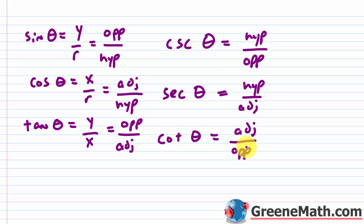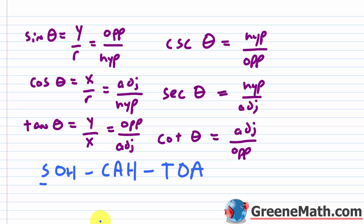How do we remember this? Recall PEMDAS for order of operations — well, here you have a similar mnemonic: SOH-CAH-TOA. S for sine is opposite over hypotenuse, C for cosine is adjacent over hypotenuse, T for tangent is opposite over adjacent. Write this down and memorize it — it saves a lot of time. Knowing the reciprocal identities makes it easy to get cosecant, secant, and cotangent by just flipping.